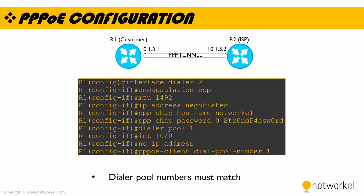Here is the configuration of PPPoE. On Router 1, we have a dialer interface. We set our encapsulation to PPP and define an MTU size. We negotiate our IP address with the other side — with the ISP — and define hostnames and passwords. After that, we configure the interface: Ethernet 0/0 will not have an IP address and will be a PPPoE client of dialer pool number 1. Please pay attention that dialer pool numbers must match on both sides.